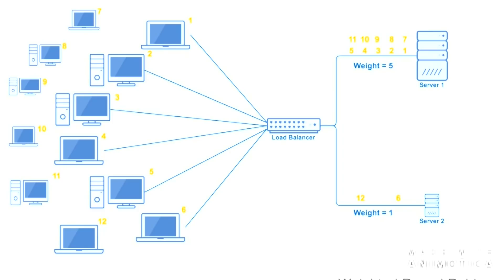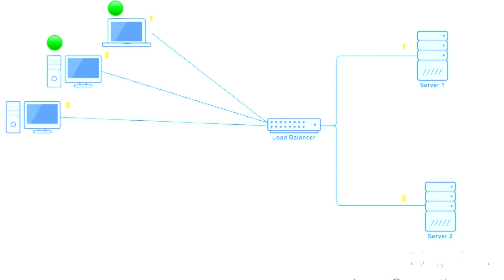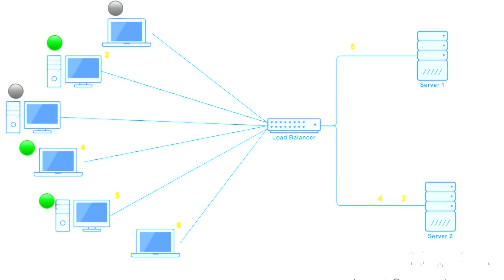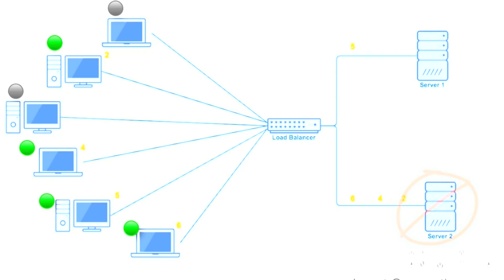Please like, share, and subscribe to our channel ZTech Media, and leave comments with any suggestions. Now, the least connections algorithm: we have two servers of equal load capacity. As requests come in, whichever server is handling less load gets assigned the next request. For example, if there are four unattended requests, they get assigned to the server with fewer active connections.